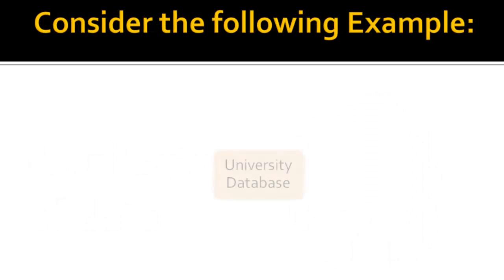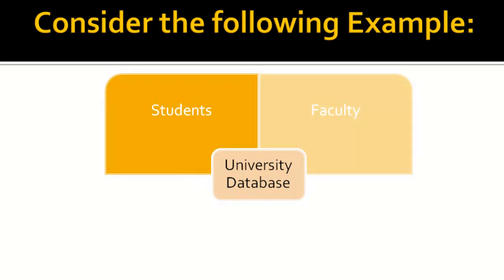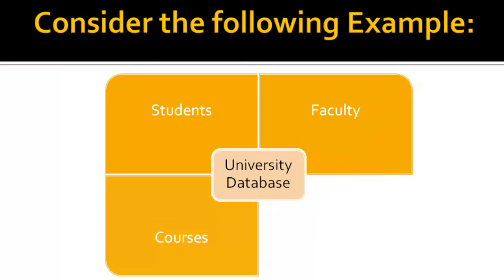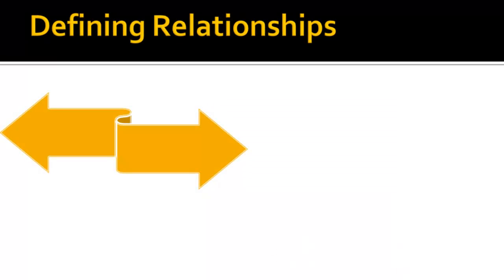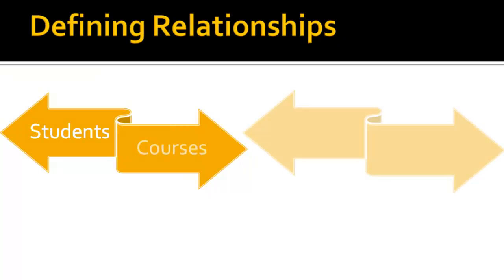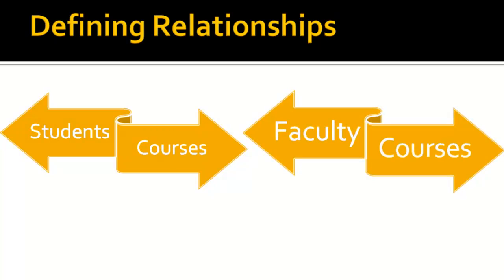For example, a university database might contain elements such as students, faculty, courses, and classrooms. The relationships between them could be the students' enrollment in courses, faculty teaching the courses, and the use of classrooms by both students and teachers for conducting classes.